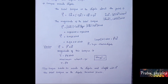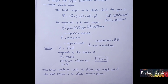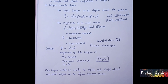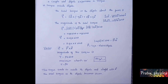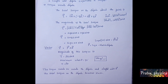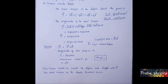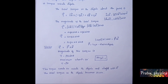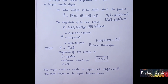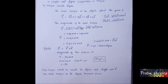The magnitude of the torque is tau equal to pE sin theta. The torque is maximum when theta equals 90 degrees, since sin 90 equals 1, giving torque equal to pE. The torque tends to rotate the dipole and align it with E vector.